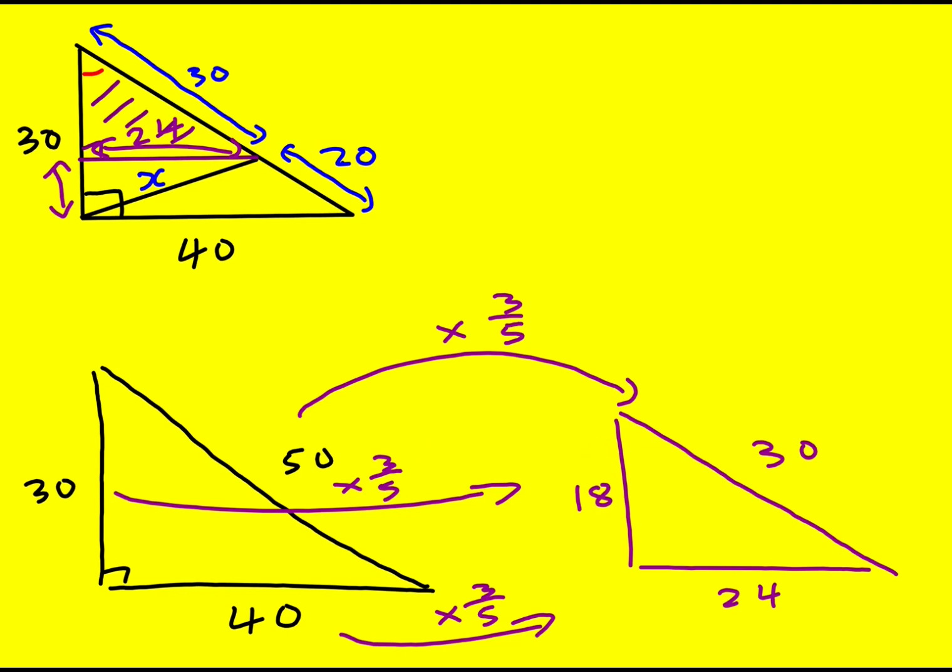This is a good method. This is 18 which means this is 12. And so I'm going to draw one more triangle out. It's this one here. I've got 12, I've got 24 and I've got x. Remember that's what I want to find. So x squared is equal to 12 squared plus 24 squared.